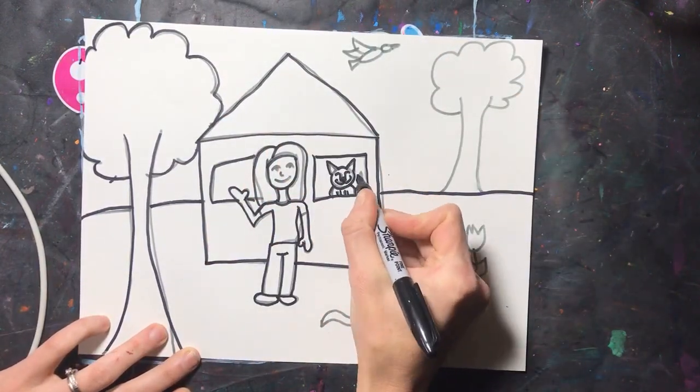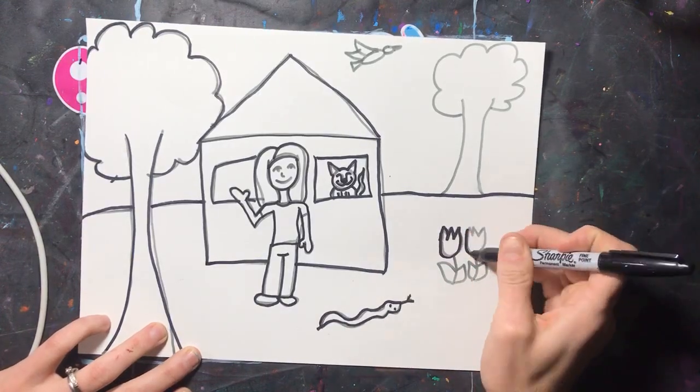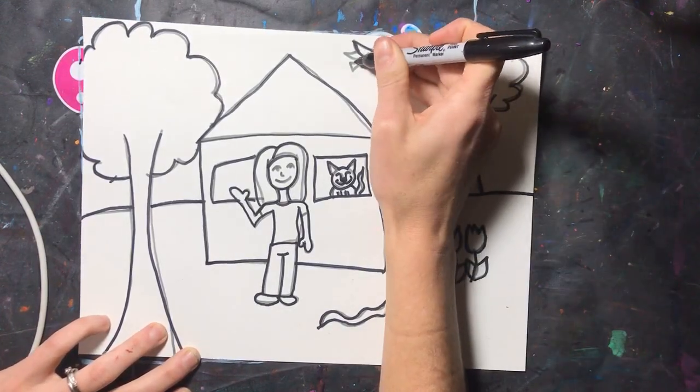Once you have finished your drawing, use your black Sharpie to trace over all of your pencil lines.